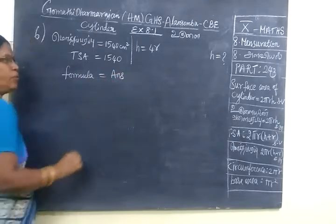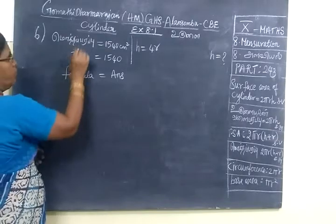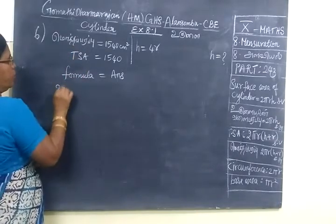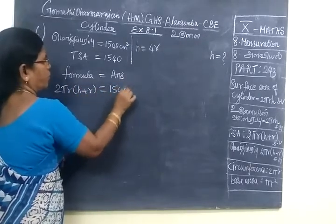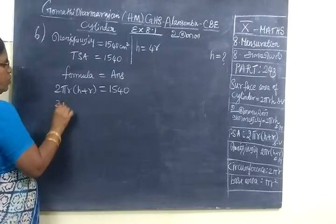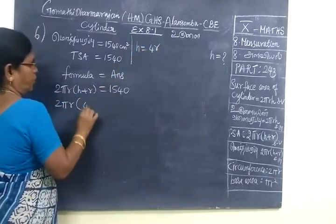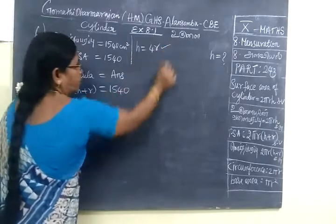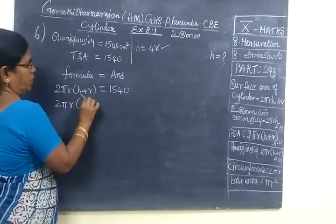This will be easier. So the formula 2πR(H + R) = 1540. The diameter is given as 4R, so in place of diameter we are writing 4R.